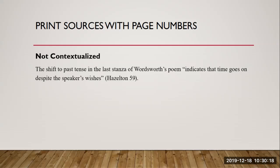When the source is not contextualized within your sentence and readers may not know who you are quoting, you will need to list the last name of the author followed by the page number, like this. There are a few things to note here. The end punctuation gets moved from the end of the quote to the end of the p-sit.